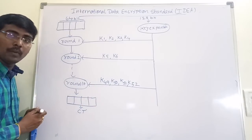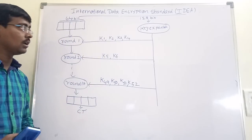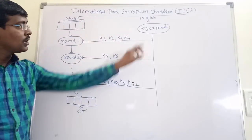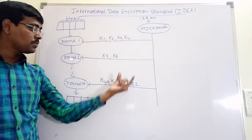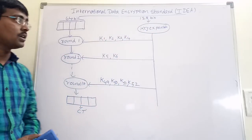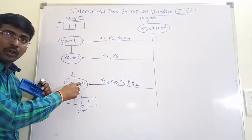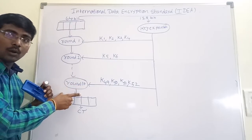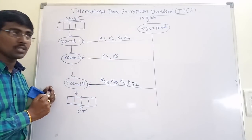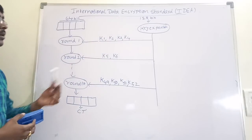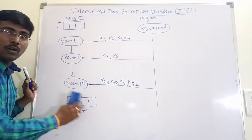After completion of 17 rounds it produces a ciphertext of 64 bits with each block of 16 bits. By observing this: first, key expansion — the 128-bit key is expanded into 52 sub-keys. Each odd round takes 4 keys, and each even round takes only 2 keys. This is the block diagram of the IDEA algorithm. Next we will discuss how to perform key expansion and operations on each round.